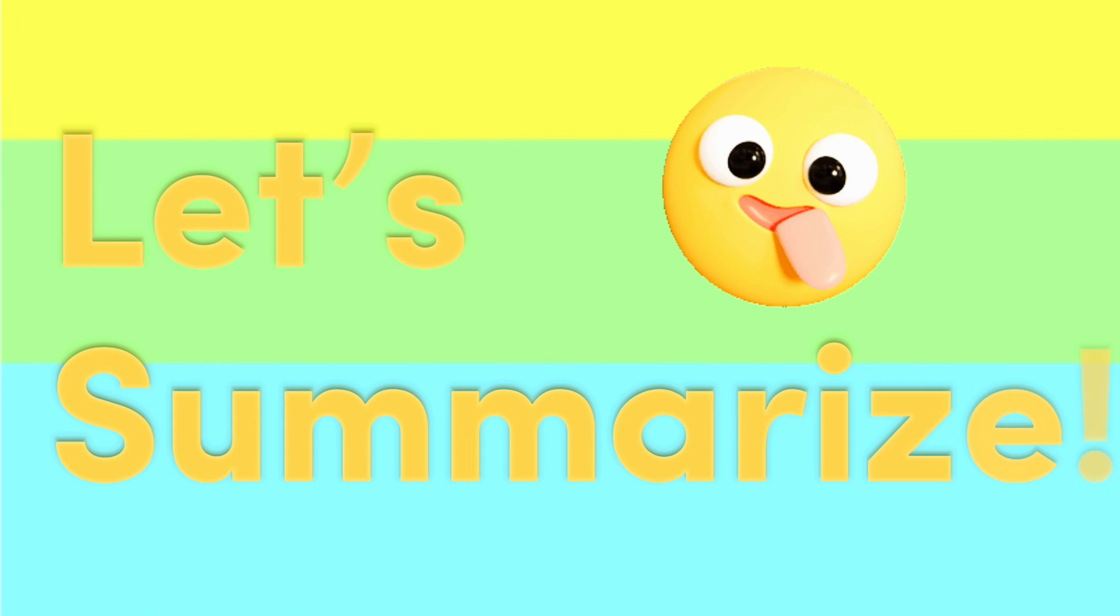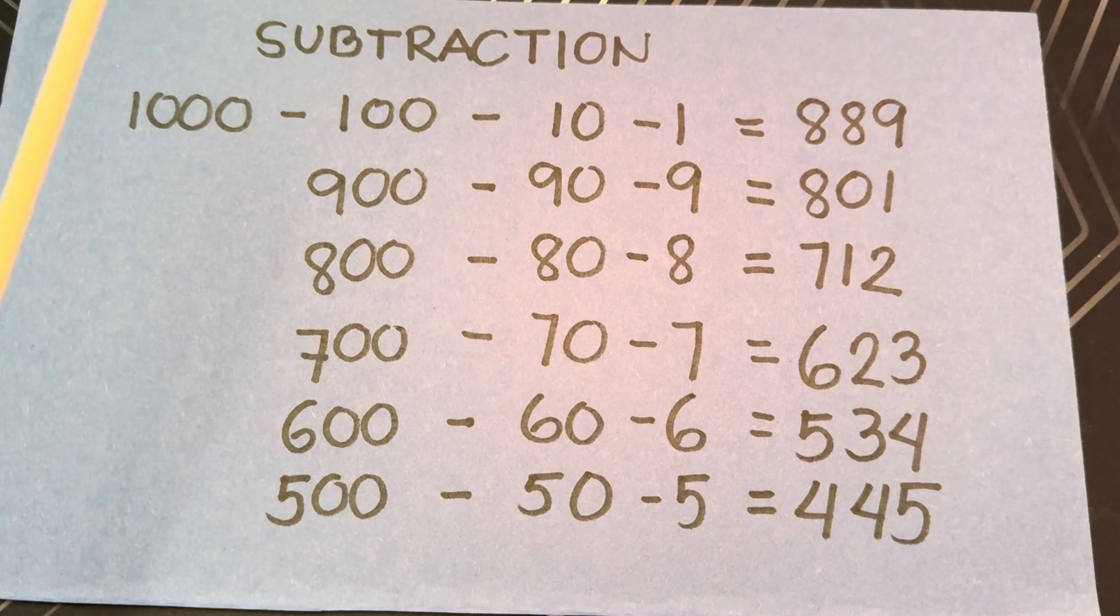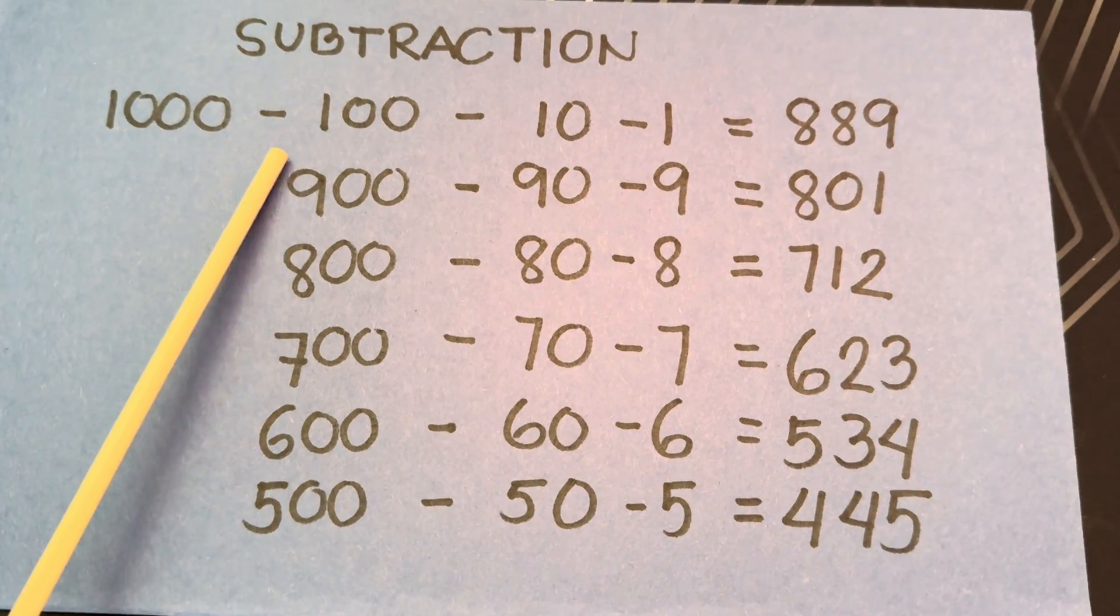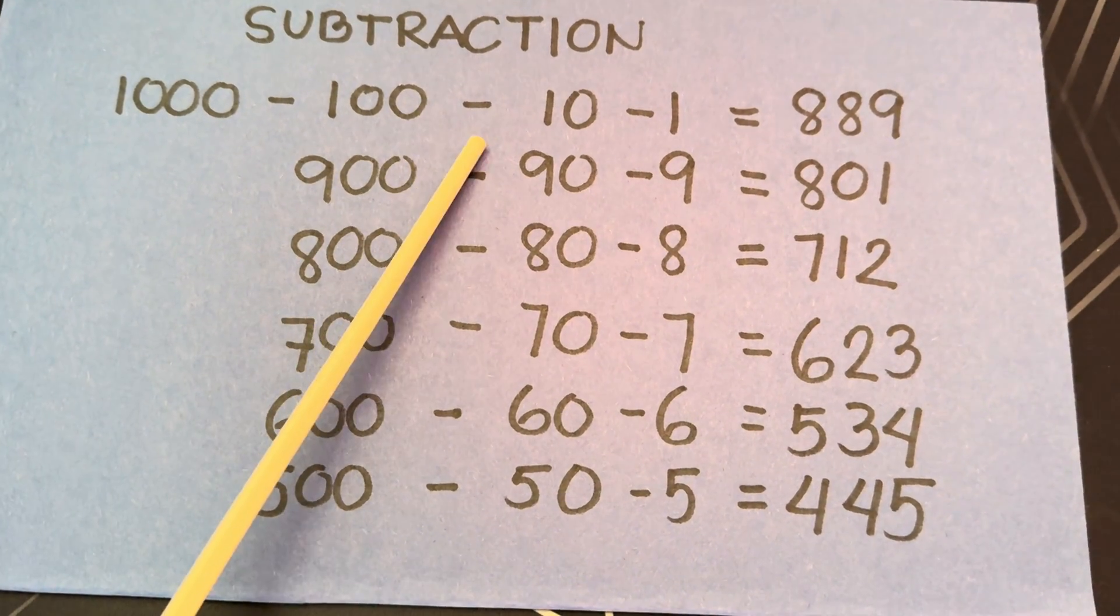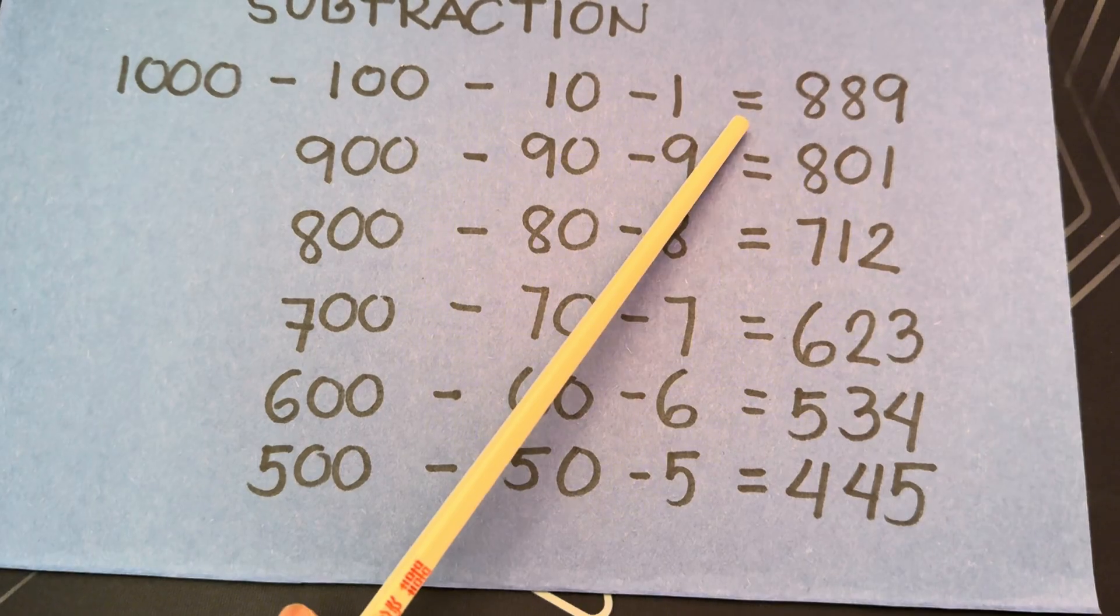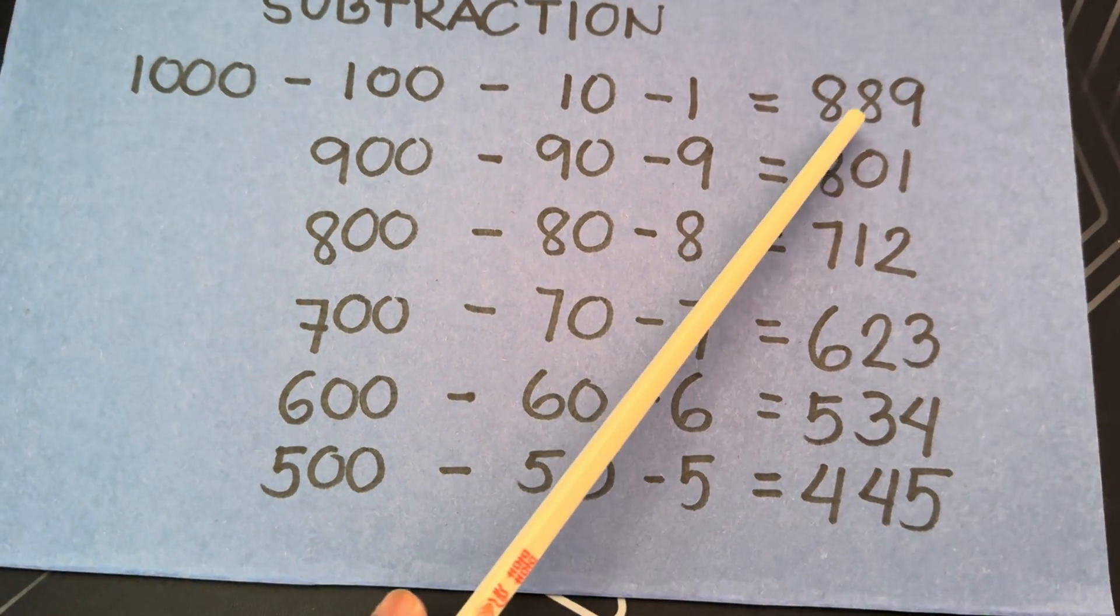445. Let's summarize. 1000 minus 100 minus 10 minus 1 is equals to 889.